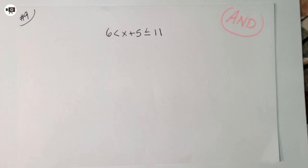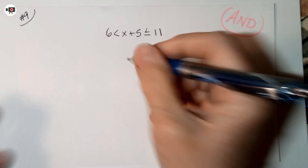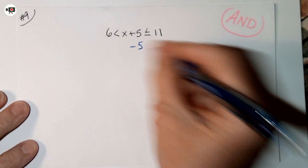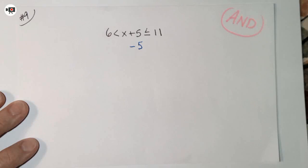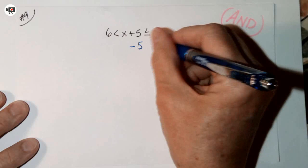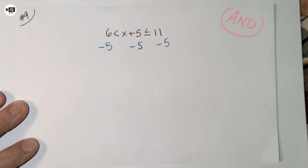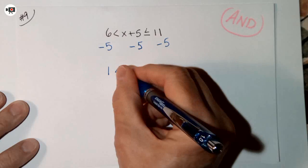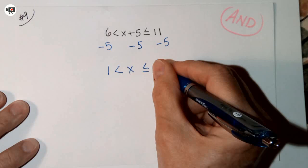With a plain equation you'd subtract 5 from both sides, but here we have three locations. So subtract 5 from every location: 6 minus 5 gives 1, x plus 5 minus 5 gives x, and 11 minus 5 gives 6. The result is 1 is less than x is less than or equal to 6. The same rules apply — just expand your thinking to three parts.